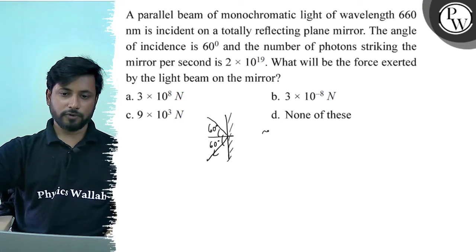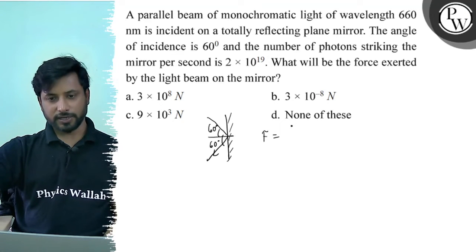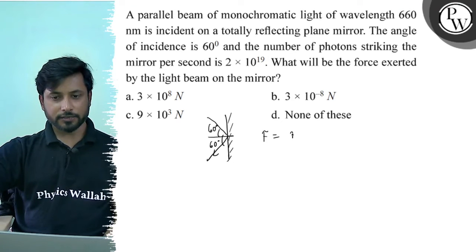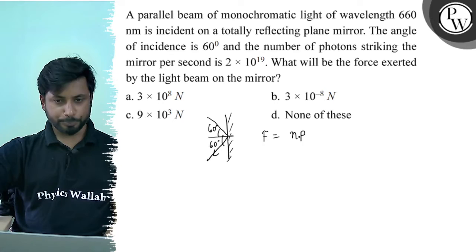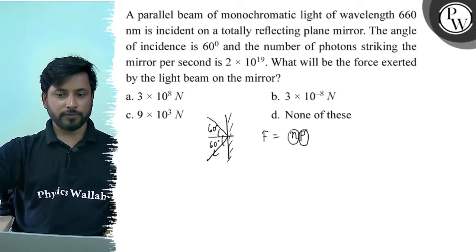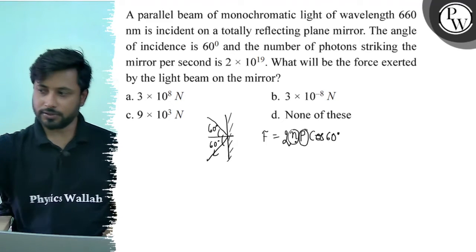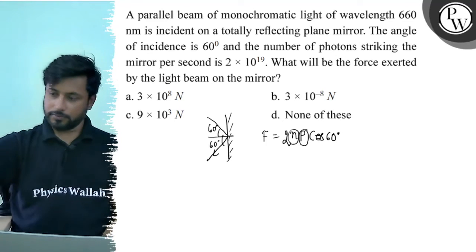So, the force exerted equals the number of photons per second times the momentum of each photon, times cos 60 degrees, multiplied by 2 for total reflection.